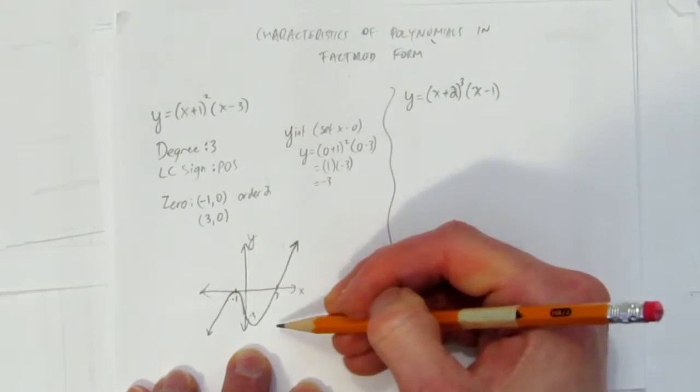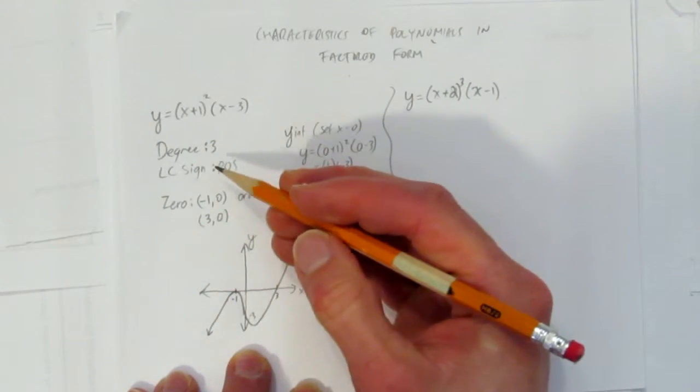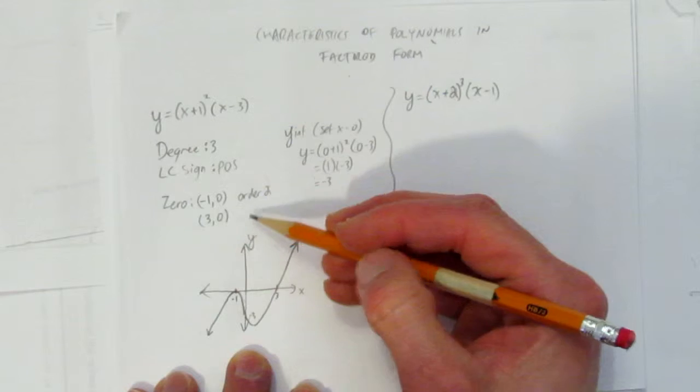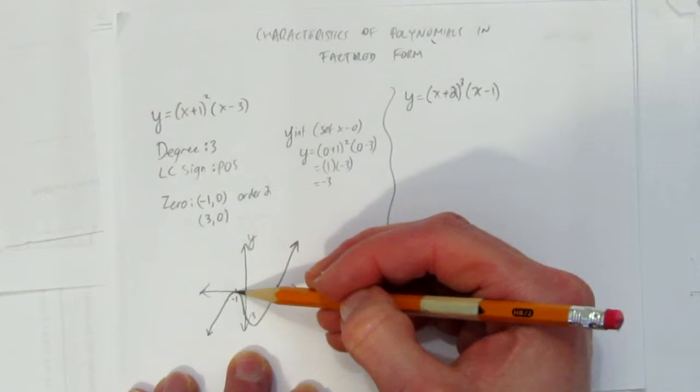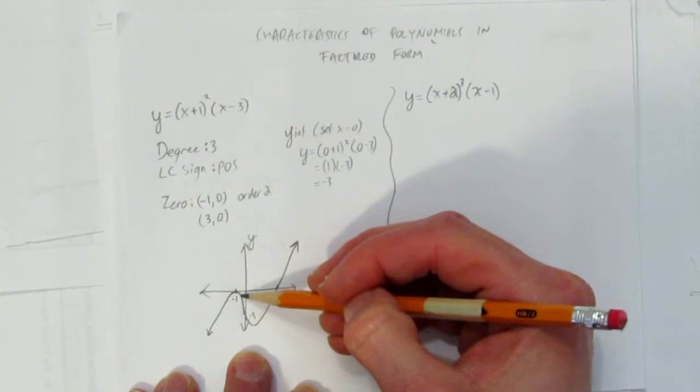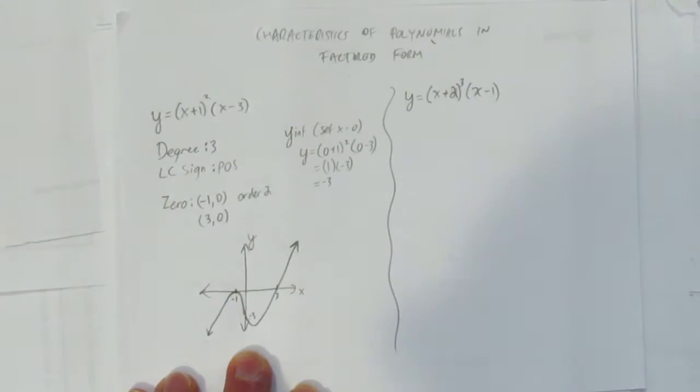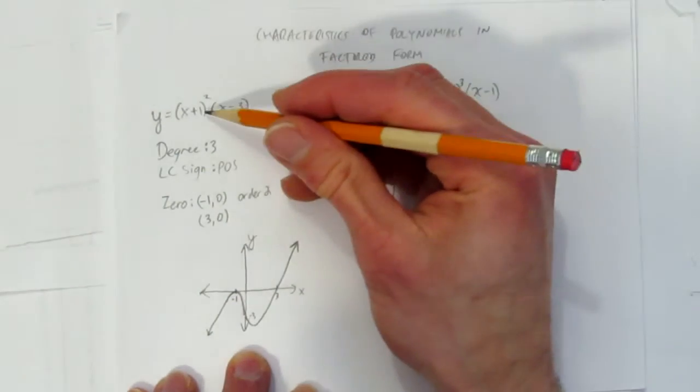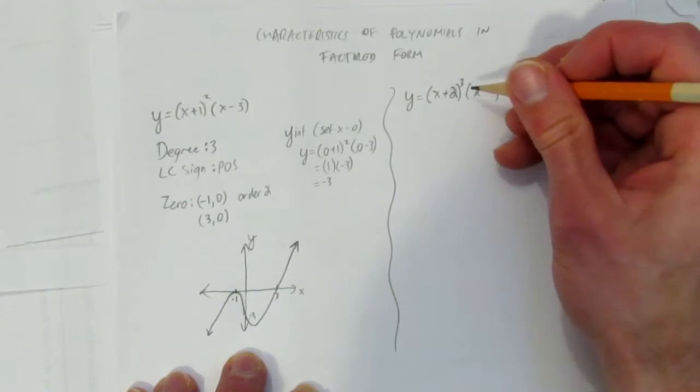So here you have a cubic. That's a positive cubic. It's of degree 3. We found its 0s and we took into account its order at this 0. And we drew on the y-intercept for good measure. And we graphed this polynomial in factored form. Let's do this one.